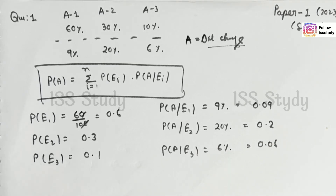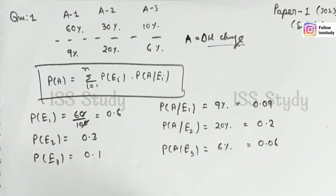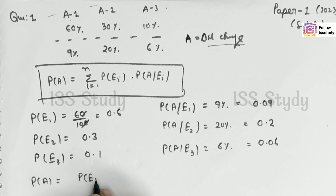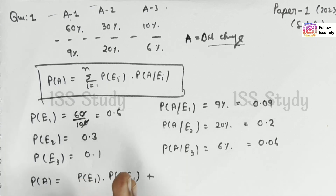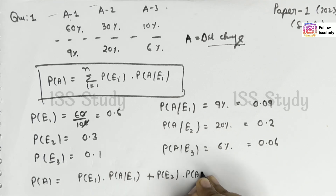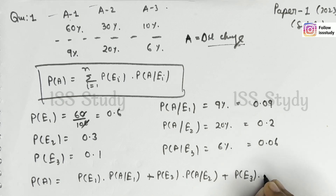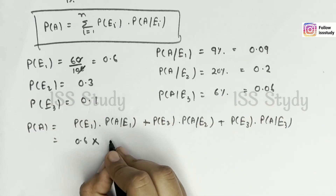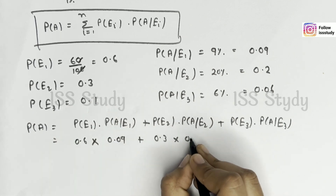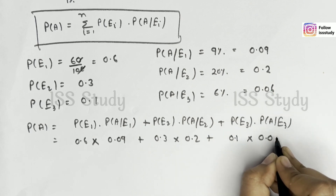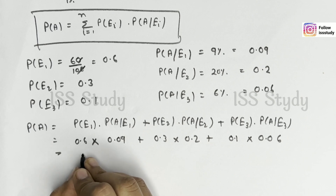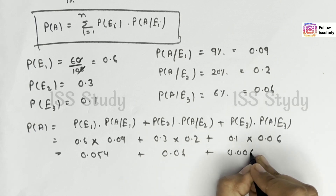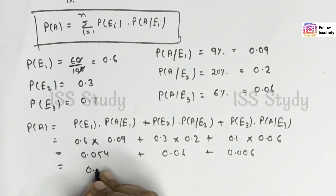Now we have to use this formula to get the solution. Probability of A equals probability of E1 into probability of A given E1, plus probability of E2 into probability of A given E2, plus probability of E3 into probability of A given E3. Putting the values: 0.6 × 0.09 + 0.3 × 0.2 + 0.1 × 0.06 = 0.054 + 0.06 + 0.006 = 0.12.